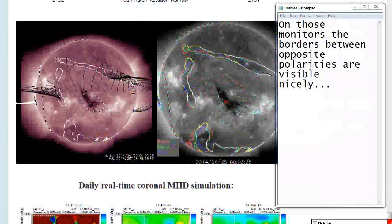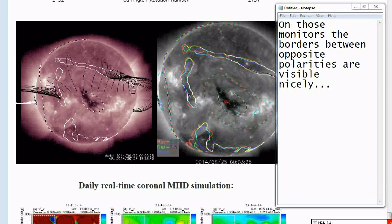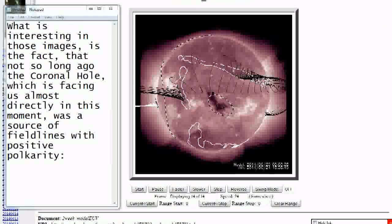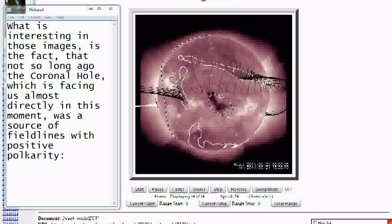On those monitors, the borders between opposite polarities are visible nicely. What is interesting in those images is the fact that not so long ago the coronal hole which is facing us almost directly in this moment was a source of field lines with positive polarity.